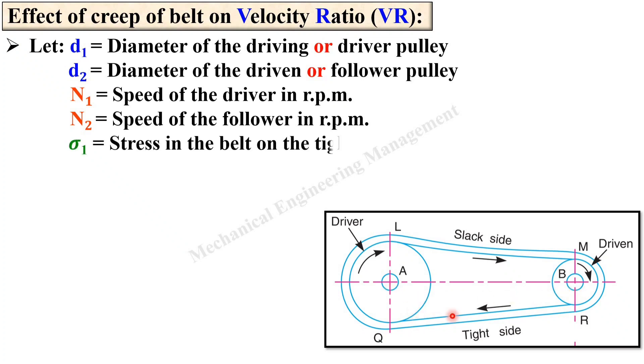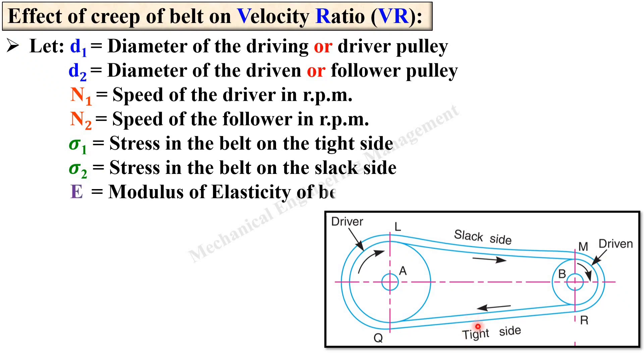Sigma 1 is the stress in the belt on tight side in Newton per mm square and sigma 2 is the stress in the belt on the slack side. Again the unit is Newton per mm square and E is the modulus of elasticity of the belt material. Again the unit of the modulus of elasticity is generally Newton per mm square.